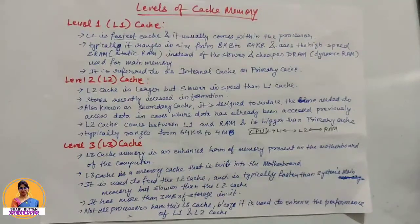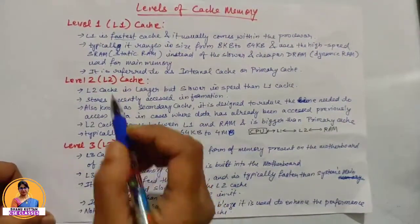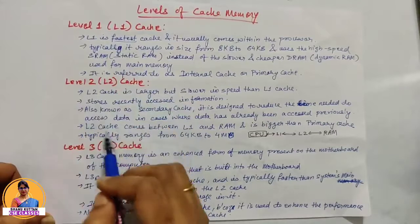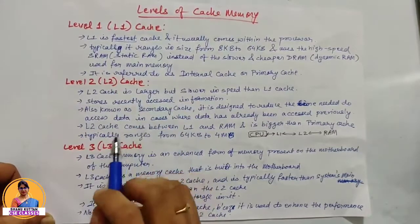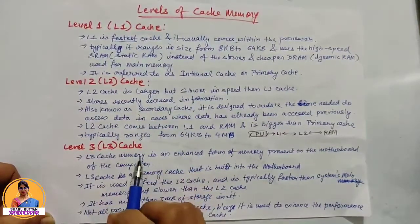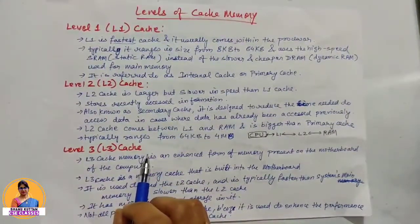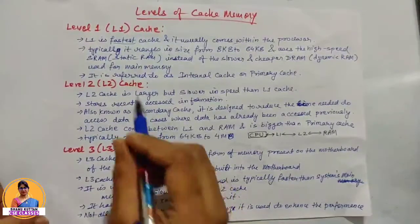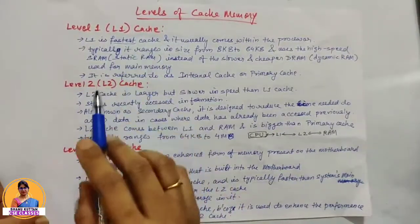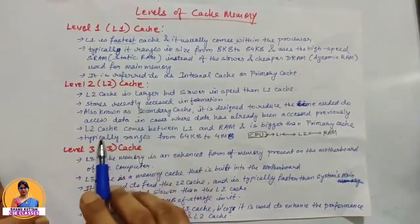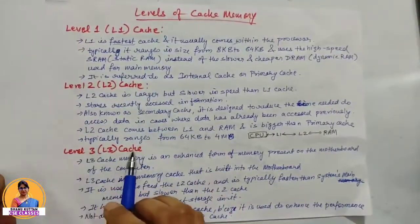Levels of Cache Memory. In cache memory, there are three levels generally found in modern computers. These are Level 1 cache, called L1; Level 2 cache, called L2; and Level 3 cache, called L3.